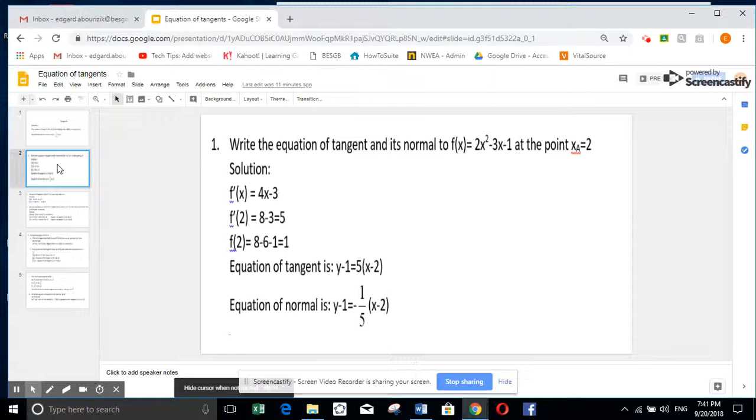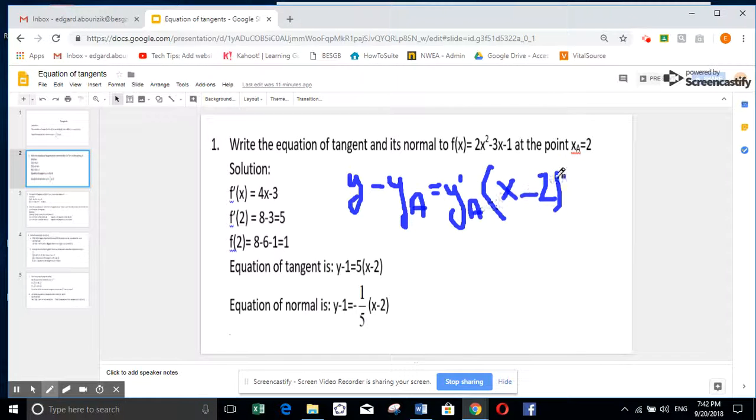So let us take the first example. The equation of tangent and its normal. We have 2x squared minus 3x minus 1, the curve at the point x of a equal to 2. We all know that the equation of tangent is y minus y of the point of tangency, suppose it's a, equal y prime of the point a into x minus x of a. But here x of a is given to be 2. So what I need to find is y of a and y prime of a. To find y of a, it's very simple.